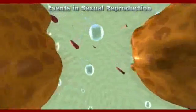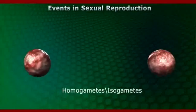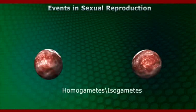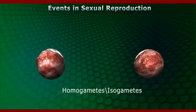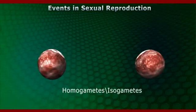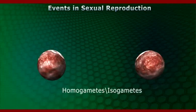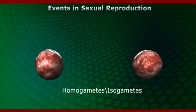In some algae, the two gametes are so similar in appearance that it is not possible to categorize them into male and female gametes. They are hence called homogametes or isogametes.